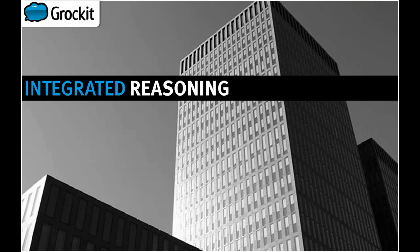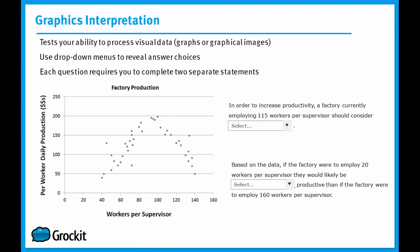Let's take a look at an actual graphics interpretation example. On the graphics interpretation questions of the integrated reasoning section of the GMAT, these question types will test your ability to process graphs of some sort. In this example we'll look at together, it's a scatter plot in which each dot represents a data point. In order to reveal our answer choices, we have to use the drop-down menus and then eventually select our answer choices from them. Each individual graphics interpretation question will have two of these statements with two drop-down menus that we'll have to answer.